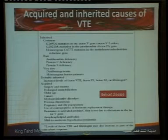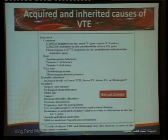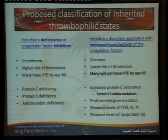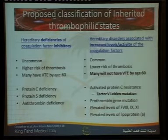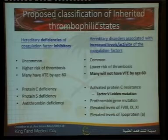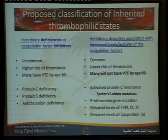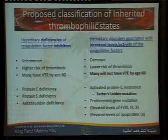The acquired causes also include Behçet's disease, which is a common cause of thrombosis in Saudi Arabia not covered by Western guidelines. For practical classification, thrombophilia includes hereditary deficiency of natural anticoagulants — uncommon but high risk. Many develop VTE by age 60. Protein C, S, and antithrombin-3 are in this category. By contrast, factor V Leiden is common in the West — 20 to 30 percent of Western patients with VTE — but in my experience with 1,000 patients in my clinic, I have only a few cases. It's rare for us but common in the Western community.